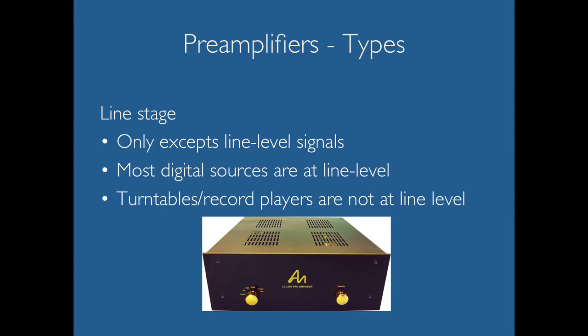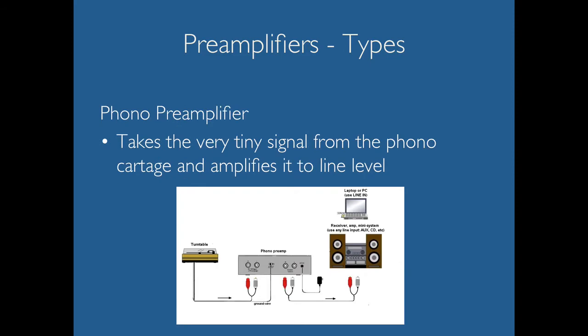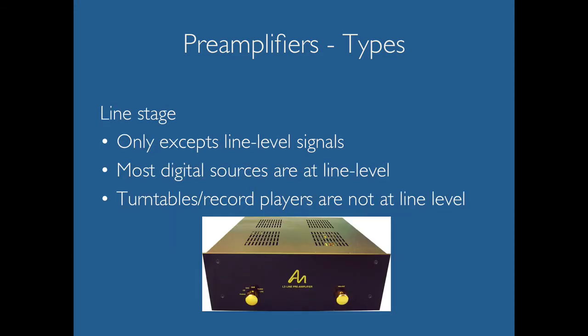Probably the most common preamplifier you'd use today is a line stage preamplifier. It only accepts line level signals, so it's ideal if you're just doing DVDs, Blu-rays, or any type of digital line level source. Turntables and record players are not at line level, so to deal with that you would need a phono preamplifier, which takes the very tiny signal from the phono cartridge and amplifies it to line level so you can use it with your line stage preamplifier.